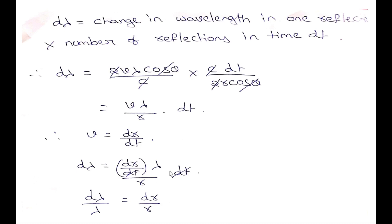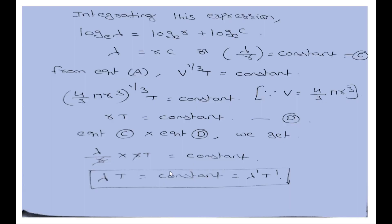Since V equals dR/dt, we have d_lambda over lambda equals dR over R. Integrating both sides gives log lambda equals log R plus log C, therefore lambda is equal to R times C, meaning lambda is proportional to R.